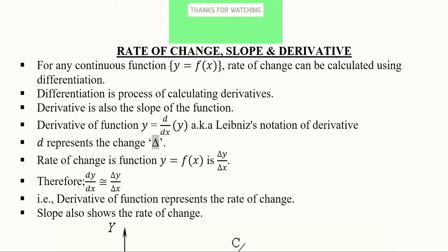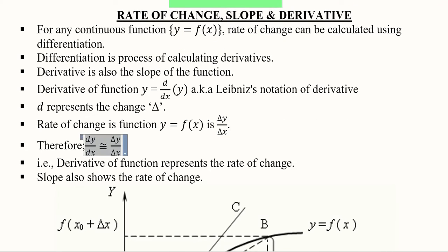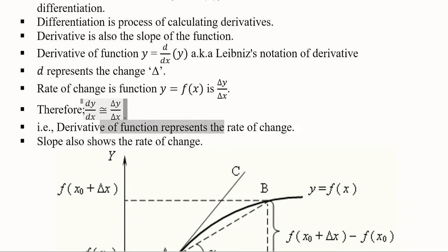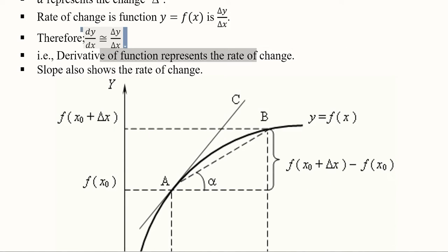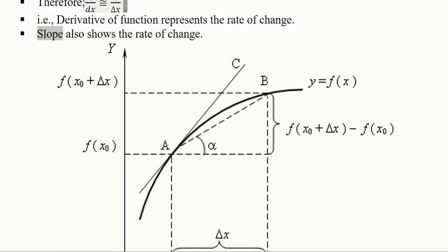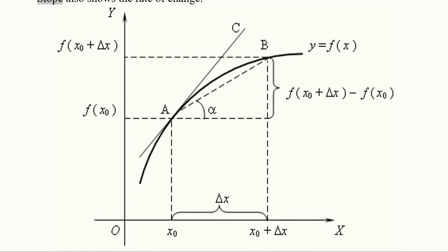If we calculate them, their answers will be nearly equal to each other. The rate of change of a function can be written as delta y over delta x, which is equivalent to dy/dx. We can equate both the continuous and discrete sense of rate of change. The derivative of a function represents the rate of change, and it is also equal to the slope of the function. These are three alternative terms we can use.